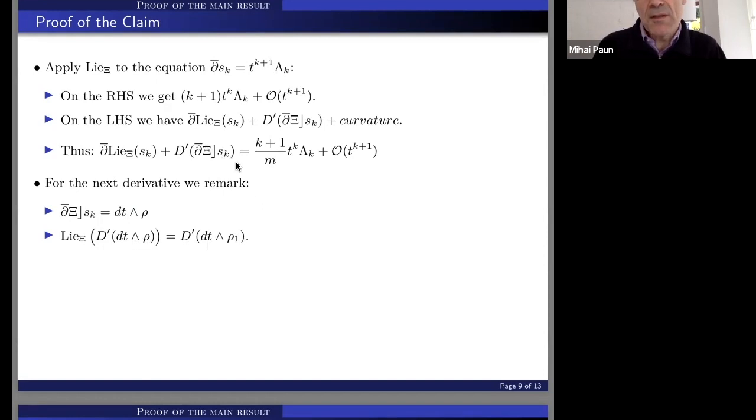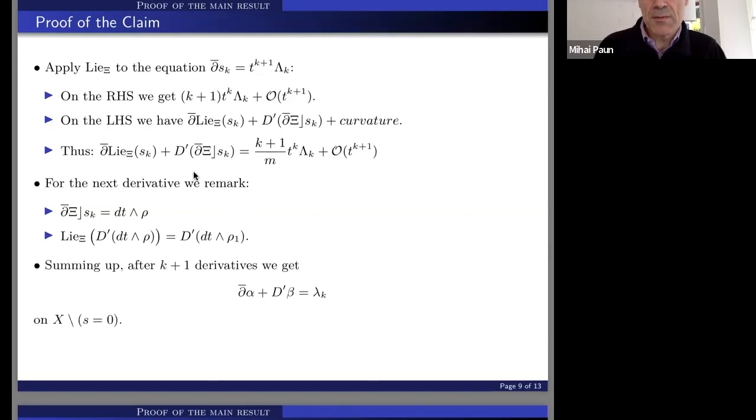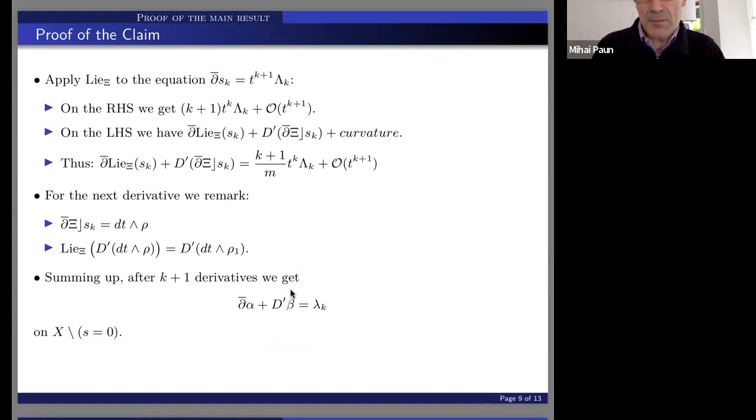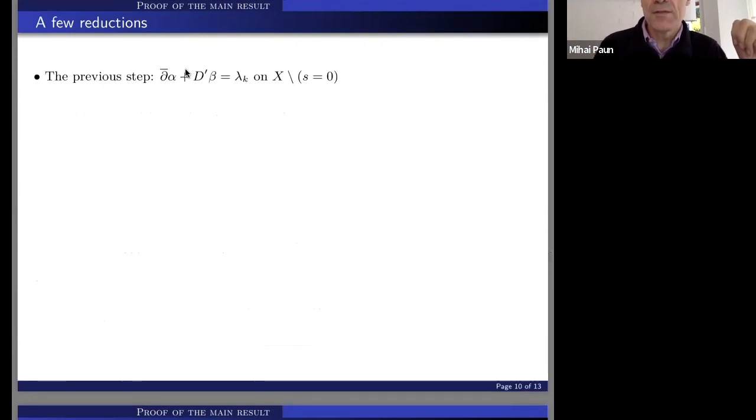So the point is now that we can do this, we can repeat this process. So we can iterate this process. So after k plus one derivatives, if we are at this point, and the shape of alpha and beta, of course, if you have the curiosity of doing this already after two derivatives, it gets very complicated, but we know that the coefficients would be meromorphic forms of the type indicated in the claim. So let's say that we have this equality here at this point.